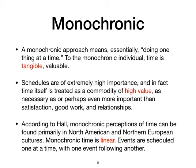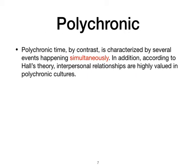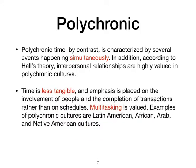Now we can talk about the polychronic concept of time. Mono means single and poly means multi. Polychronic time is characterized by several events happening simultaneously. According to Hall's theory, interpersonal relationships are highly valued in polychronic cultures. Time is less tangible, and emphasis is placed on involvement of people and the completion of transactions rather than schedules. Multitasking is valued, and some examples of polychronic cultures are Latin American, African, and Native American cultures.